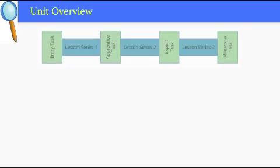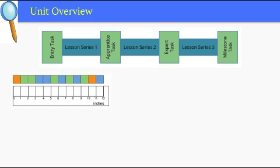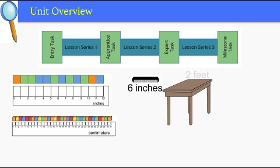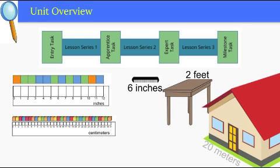At the beginning of this unit, students develop an understanding of why standard units are helpful. They make rulers using one-inch square tiles and centimeter cubes and use them to measure classroom objects. They go on to develop a sense of the relative size of inches, feet, and meters and decide on the best tool to use for measuring various objects.